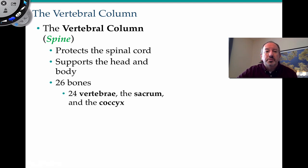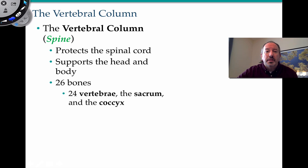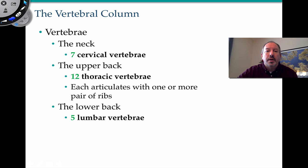The vertebral column or spine protects the spinal cord — most importantly, it protects that large bundle of nerves traveling anteriorly out of the brain in a downward direction. It also supports the head and body. It's made up of 26 bones: the sacrum, coccyx, and vertebrae.